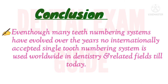In conclusion, though many tooth numbering systems have evolved over the years, no single internationally accepted tooth numbering system is used worldwide in dentistry and related fields today. Fields other than dentistry — such as forensic odontology, anthropology, and zoology — often use different tooth numbering systems, which can lead to misinterpretations. Hence, many authors, clinicians, and researchers recommend FDI's two-digit system because of its simplicity, accuracy, safety, and applicability in modern technology.